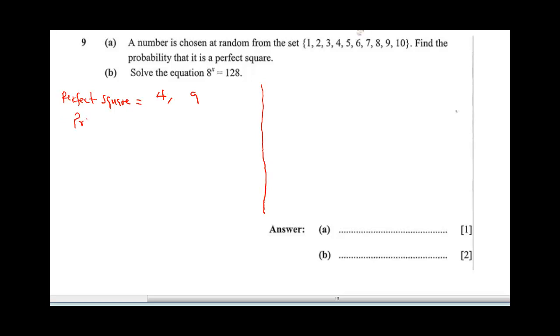Probability of having a perfect square would be 2 over 10. So this would be 2 over 10, which is 1 over 5.